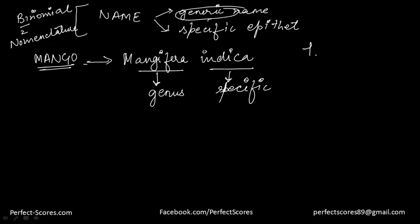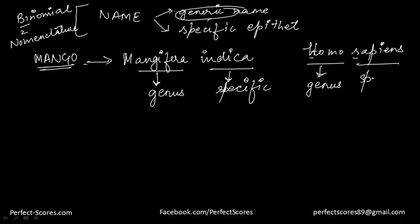Do you know what human beings are called? We are called Homo sapiens. Whenever you see species mentioned, they are written in italics, and the first word — the name of the genus — always starts with a capital letter while the other name always starts with a small letter. So Homo is our genus and sapiens is our specific name. Very close relatives like Homo erectus belonged to the same genus but a different species.